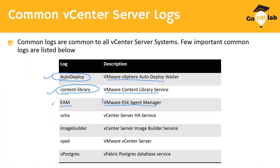VCHA is the vCenter High Availability service. It handles the active, passive, and witness node configuration to make your vCenter Server highly available. Whenever you are facing any issue very specific to VCHA, that's where you have to look at this particular log folder.